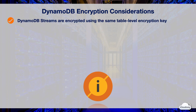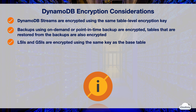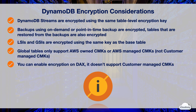When you enable DynamoDB Streams on a table, DynamoDB encrypts the stream using the same table-level encryption key. Table backups using on-demand or point-in-time backup are encrypted, and tables restored from backups are also encrypted. LSIs and GSIs are encrypted using the same encryption key as the base table. You can only encrypt global tables using AWS-owned CMKs or AWS-managed CMKs — customer-managed CMKs are not supported for global tables. You can enable encryption at rest on DAX; however, DAX doesn't support encryption using customer-managed CMKs.